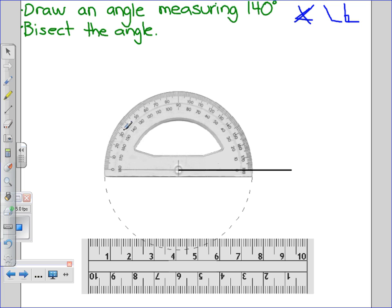Now, I'm going to look at my protractor. Here's 90 degrees. I know I need to be greater than that, so it's going to be over 90. So, I'm going to be using the inner numbers. And I want an angle that measures 140 degrees. Here's 140 degrees. I'm going to put a small dot above 140 degrees. I'm going to move my protractor.